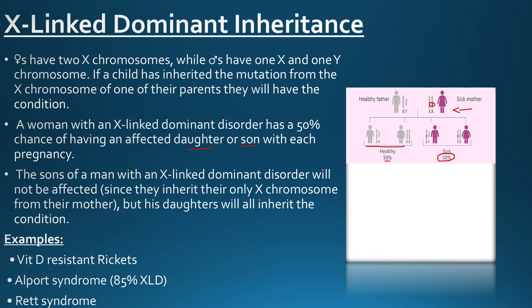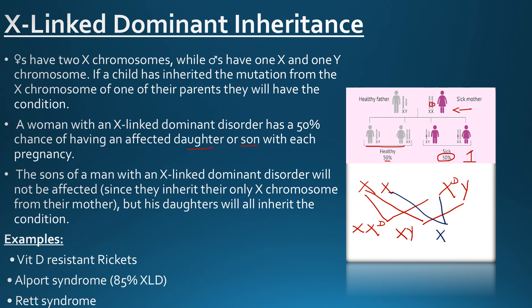Only one mutated gene is needed for the disease to manifest in X-linked dominant inheritance. Whereas if the father has the disease, marked as XD, and the mother is completely normal, both daughters will be affected by the condition whereas the sons will be spared, because the father passes on the Y chromosome to his sons. Some examples of X-linked dominant disorders are vitamin D-resistant rickets, Alport syndrome, and Rett syndrome.